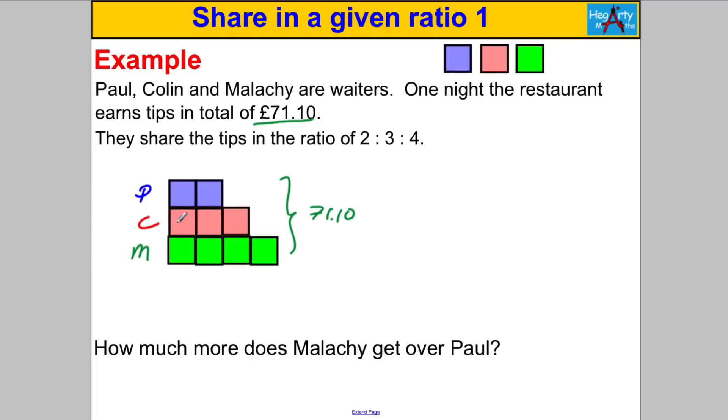You know in total they have 2 add 3 is 5, add 4 is 9 parts. So we know that 9 parts is worth 71 pounds 10 pence. We want one part so we can fill in the worth of one box, so we're going to have to do 71 pounds 10 divided by 9. Really we need to go off and do a short division, so take a bit of time to do that down here.